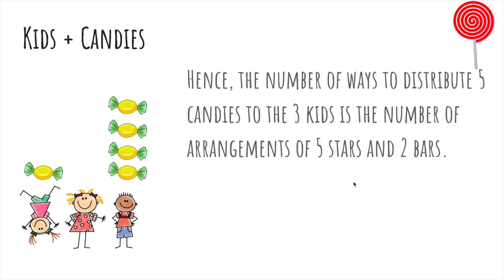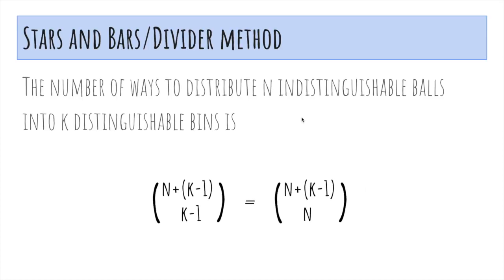So the number of ways to distribute five candies to the three kids is the same number of arrangements of five stars and two bars. And this is actually exactly seven choose two or seven choose five. It's like rearranging the letters in poopoo. So the number of ways to distribute n indistinguishable balls into k distinguishable bins is you have the number of balls plus k minus one bins because those are the dividers and you choose either the number of balls or the number of bins.